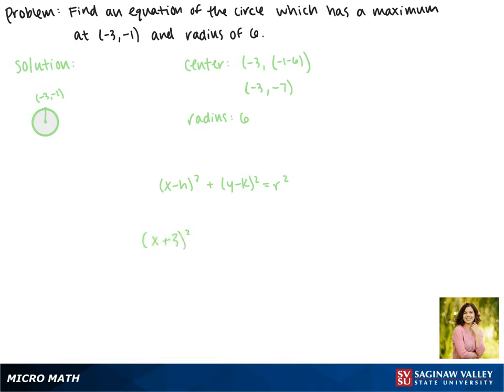So we can plug in our values. That gives us x plus 3 squared plus y plus 7 squared equals 6 squared, which is 36.